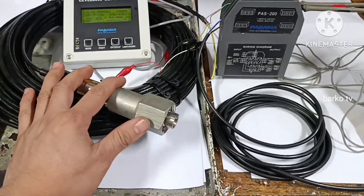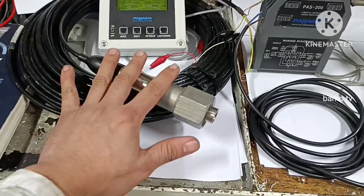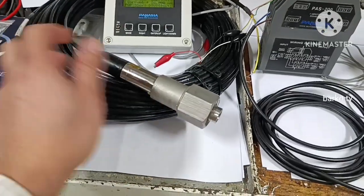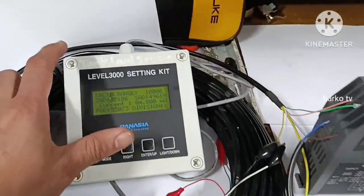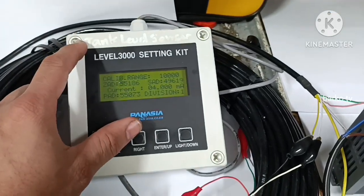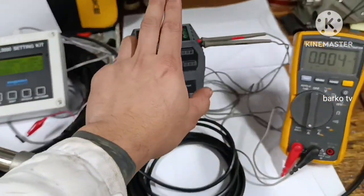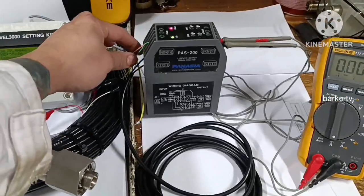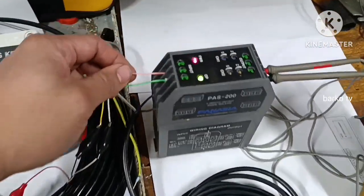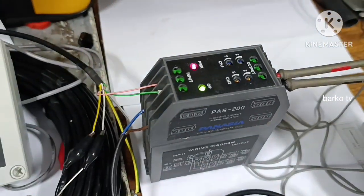In this video I will share with you first the components and then in part 2 how to calibrate this one using the calibrator Level 3000 Setting Kit. This is very important and this is the secret how to calibrate zero and then full in actual.